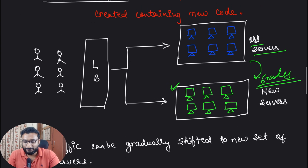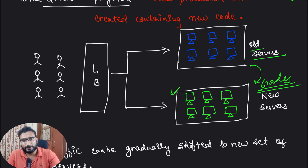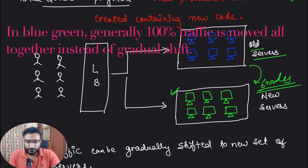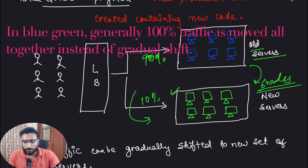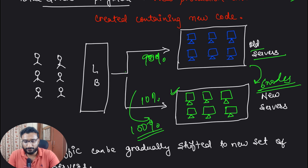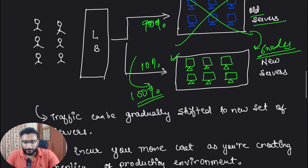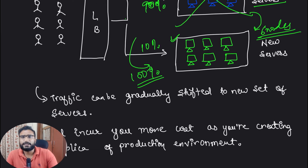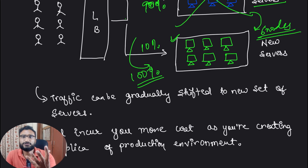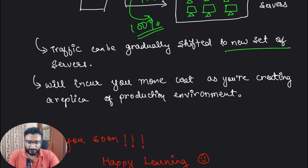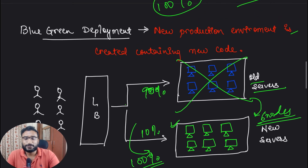That is one main downside of Blue-Green deployment. But in terms of benefits, you divide the traffic similarly — initially serving 10% traffic from the new environment and 90% from the old one. Eventually, once you have 100% confidence, all traffic is served from the new system and the old one is cut down. It's a completely new environment. Once we're confident everything is right, the old code is deprecated and all users are served via the new code. This does incur more cost because you are creating a new deployment.